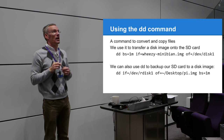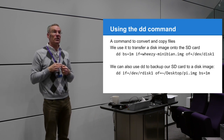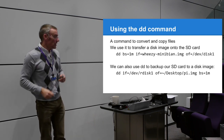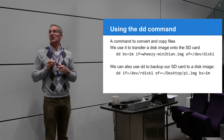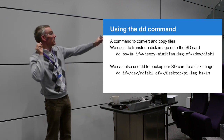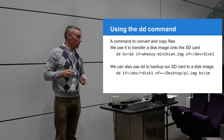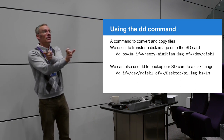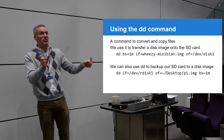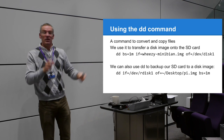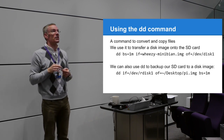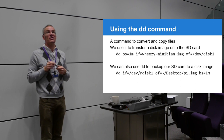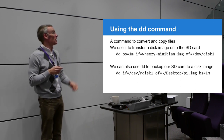You run the dd command, make a cup of tea, come back and the SD card is imaged. 'dd' is a byte streaming tool - it takes a stream of bytes from one place and streams it to another. If you want to back up your card to a disk image, you simply reverse the two arguments and it streams from the SD card to a file on your computer. I copy and paste the command into Evernote and reuse it next time.